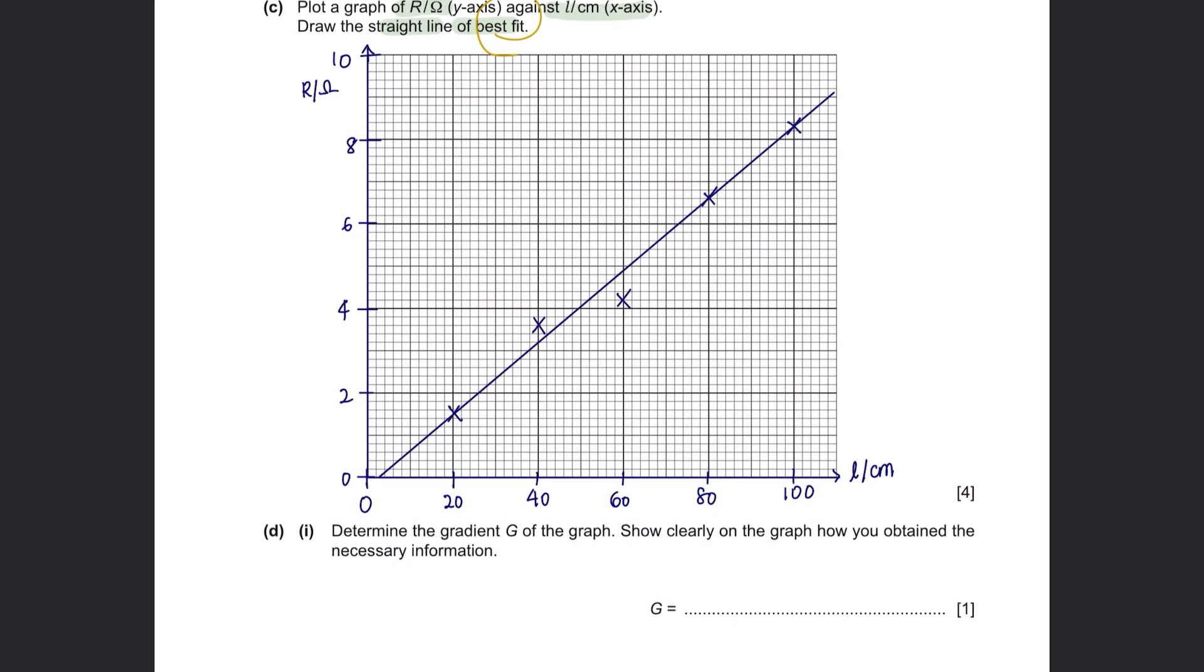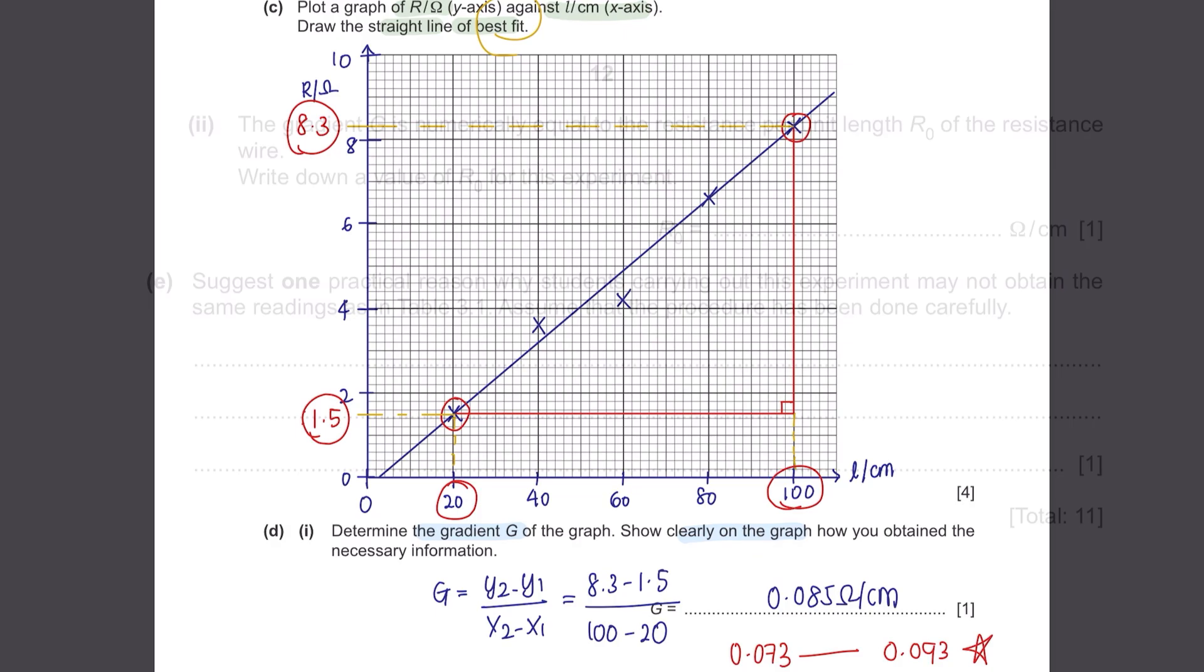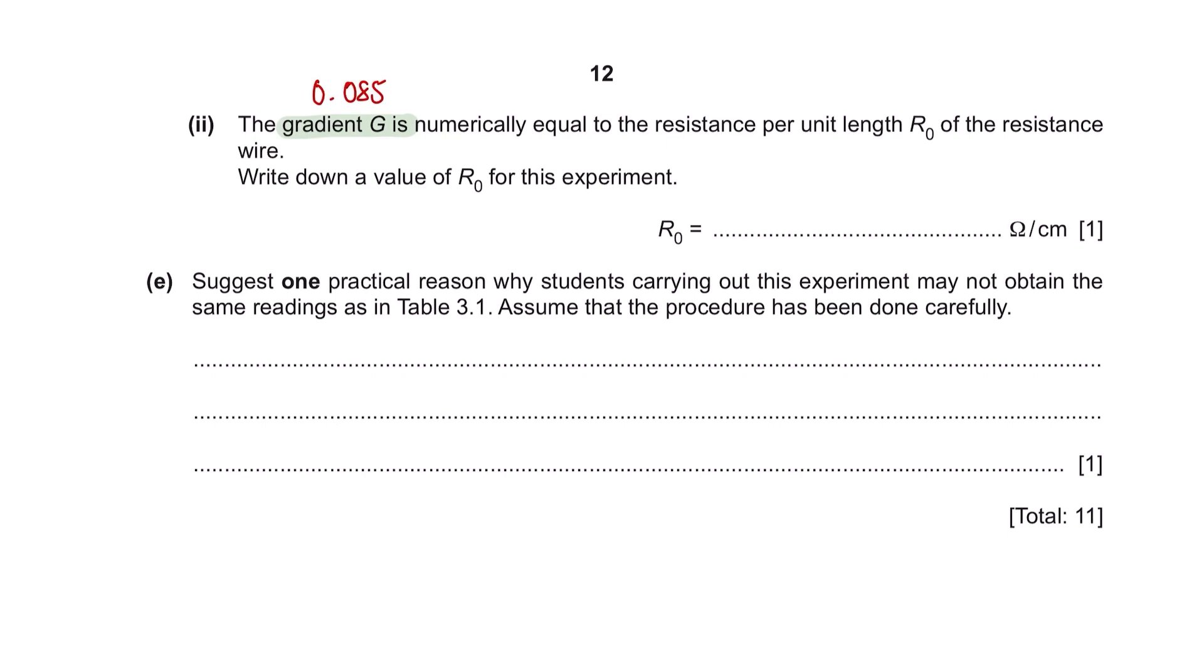Question D, part 1. Determine the gradient G of the graph. Show clearly on the graph how you obtain the necessary information. To find gradient, get two points furthest from each other and get their coordinates. Using the formula Y2 minus Y1 over X2 minus X1, I got a value of 0.085. Do not forget your units ohms per centimeter. Based on your marking schemes, a range of 0.073 to 0.093 is an acceptable answer. Part 2. The gradient G is numerically equal to the resistance per unit length R0 of the resistance wire. Write down a value of R0 for this experiment. Since they mention here that it is equal, the value of R0 will be the value of your gradient.